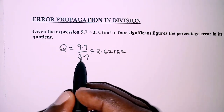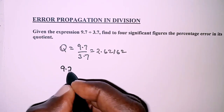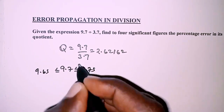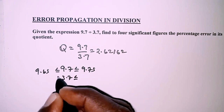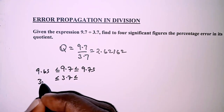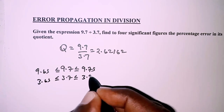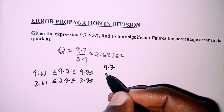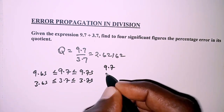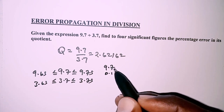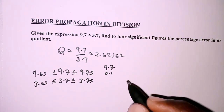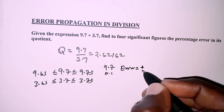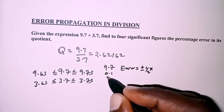The next thing is to get the limits of 9.7 and 3.7. So 9.7 lies within the limits 9.65 to 9.75, and for 3.7 we also have the limits 3.65 to 3.75. For 9.7, we determine the least unit of measurement, which is 0.1, because 9.7 is expressed to one decimal place.